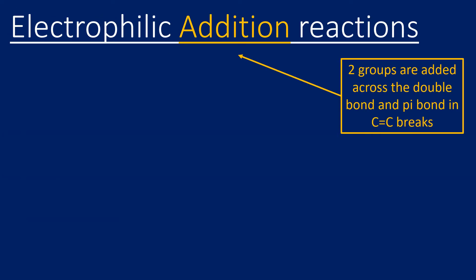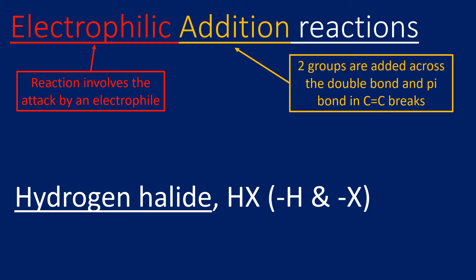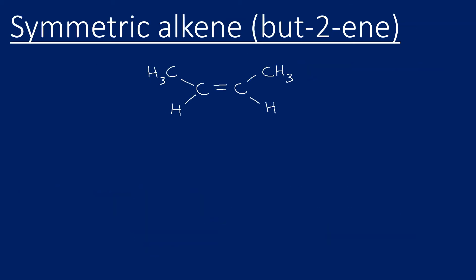It's called addition because we're adding two groups across the double bond as the pi bond breaks, and electrophilic because the reaction involves attack by an electrophile. In today's example, the electrophile is a hydrogen halide. Drawing HX — for example HBr — it's a polar molecule with δ− on X and δ+ on H. The δ+ hydrogen will accept a pair of electrons and is attracted to the electron density of the carbon-carbon double bond.